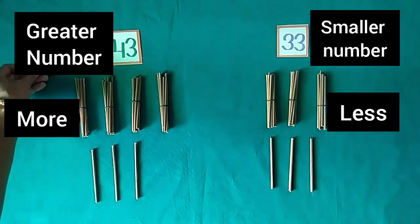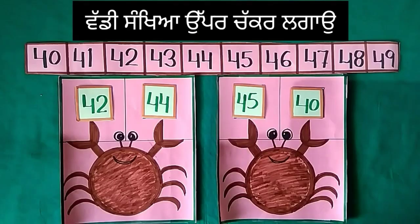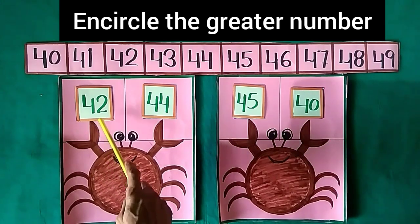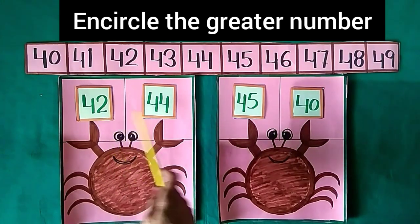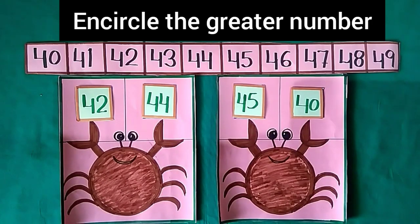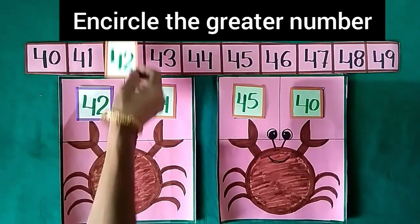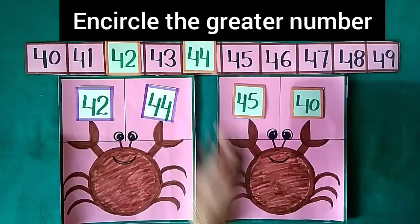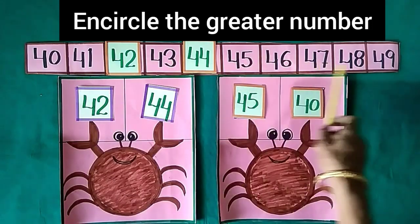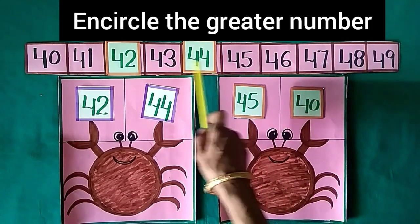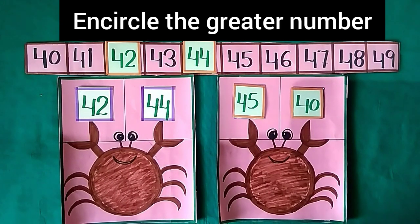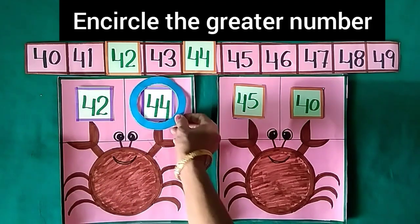43 is the greater number. Now we solve the sums and circle the greater number. There are 2 numbers: 42 and 44. The first number is 42 and the other number is 44. Look at the number strip — 44 comes after 42, so 44 is the greater number. So we encircle it.